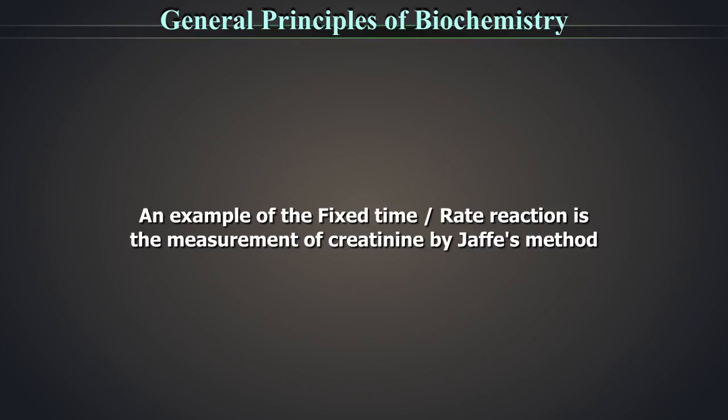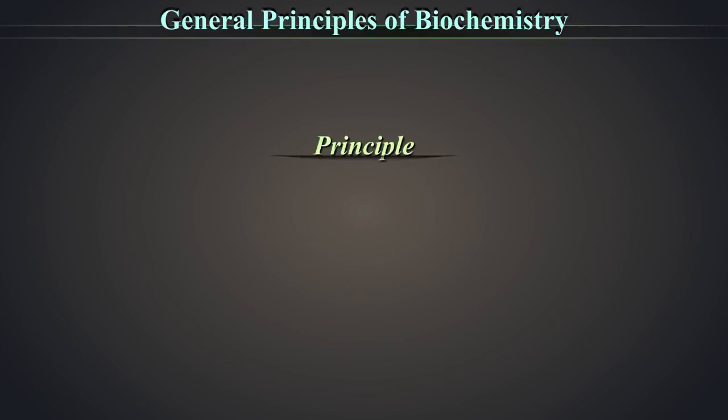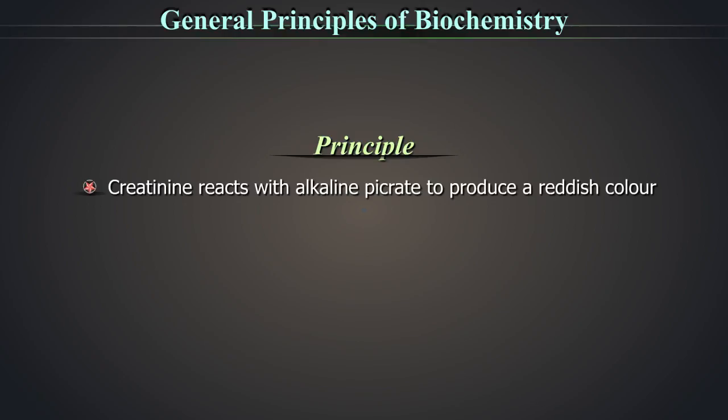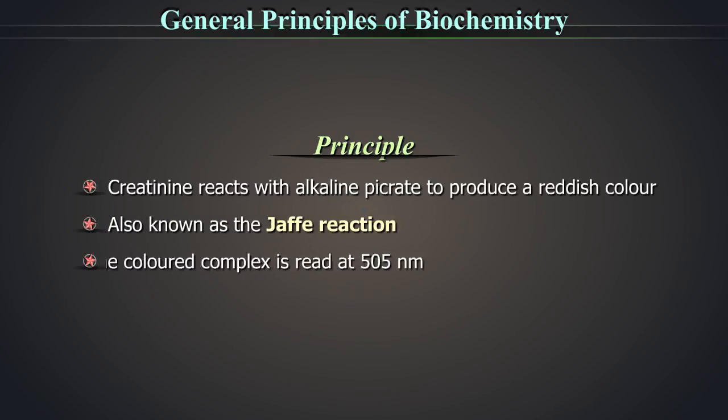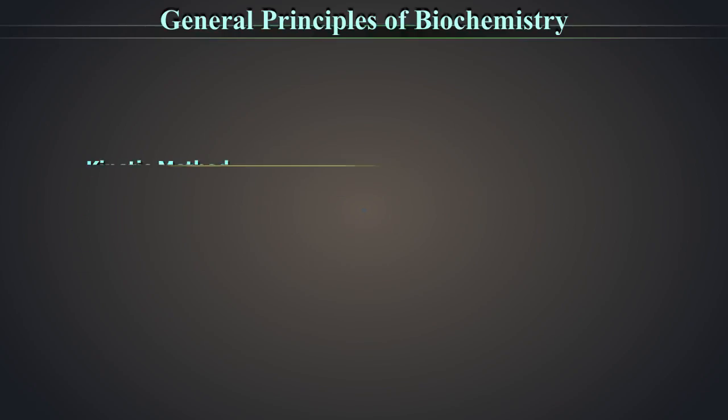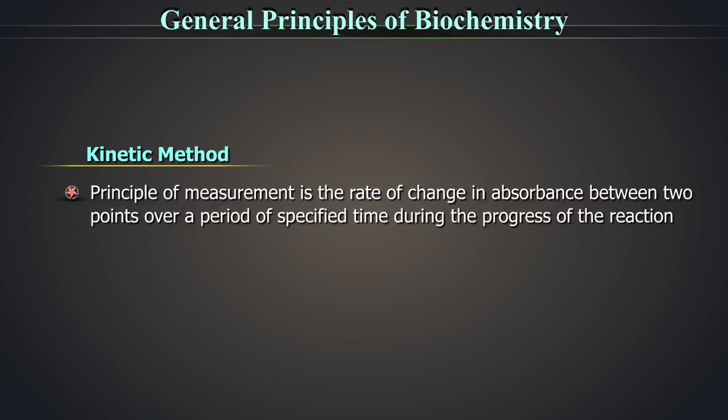An example of the fixed time or rate reaction is the measurement of creatinine by Jaffe's method. Principle: Creatinine reacts with alkaline picrate to produce a reddish color. This is also known as the Jaffe reaction. The colored complex is read at 505 nm. The principle of measurement is the difference in absorbance between two points over a period of specified time during the progress of the reaction.